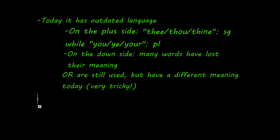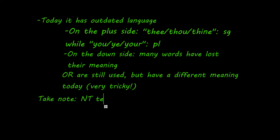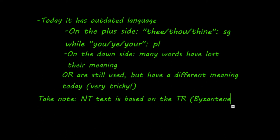Another thing you should keep in mind when reading the KJV, especially the New Testament, is that the Greek manuscripts that are translated are from the Byzantine tradition, or the TR — the Textus Receptus, which is Latin for 'the Received Text.' These are from the so-called Byzantine tradition.